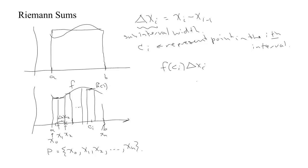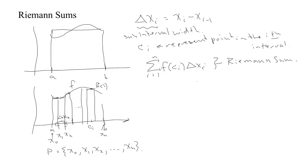That gives us essentially the area of one of these rectangles, and then we can approximate the total area under this curve by summing up all the slices from the first slice to the last slice. This kind of approximation — a sum of a bunch of slices — is called a Riemann sum.